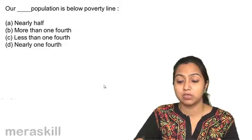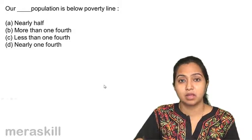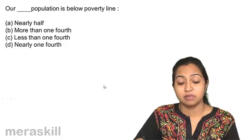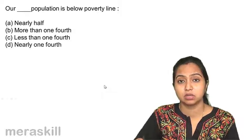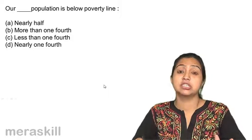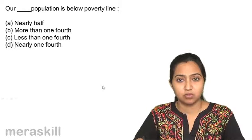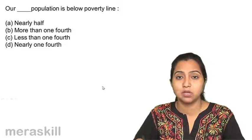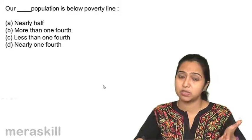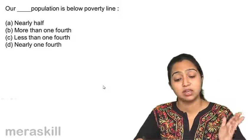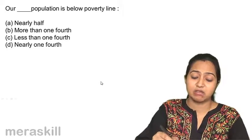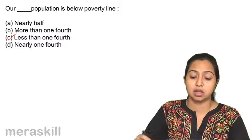A dashed population is below poverty line. Nearly half, more than one-fourth, less than one-fourth or nearly one-fourth. 22% of our population is below poverty line. It is like less than one-fourth population is below. One-fourth population is 25%. And we are 22% of the population is below poverty line. So, we can say that less than one-fourth population is below poverty line.